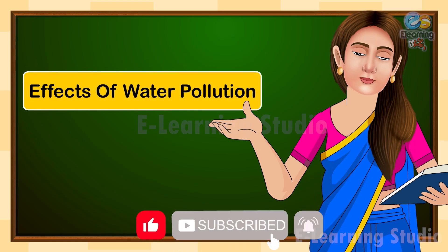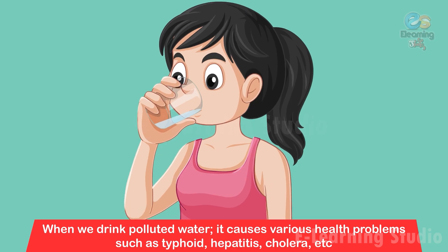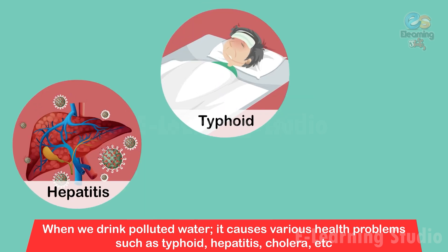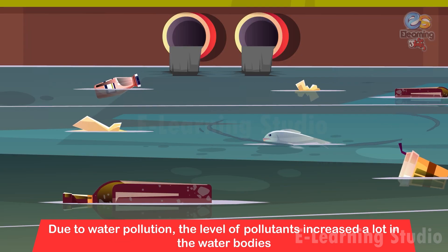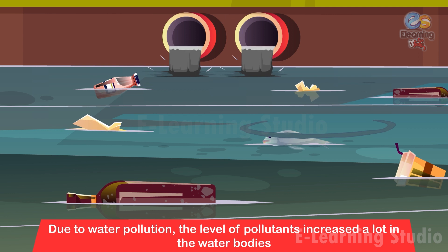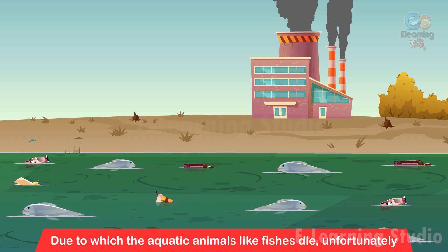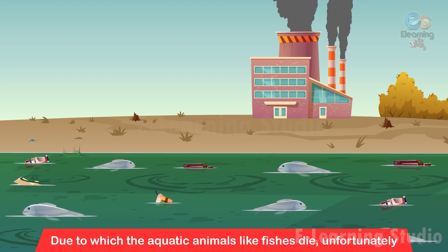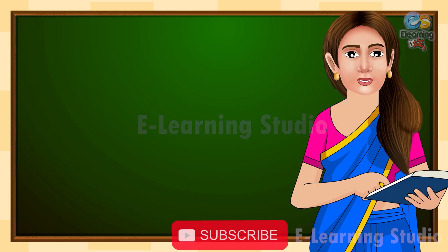Children, let us know about some effects of water pollution. When we drink polluted water, it causes various health problems such as typhoid, hepatitis, cholera, etc. Due to water pollution, the level of pollutants increases a lot in the water bodies, due to which aquatic animals like fishes die unfortunately. Water pollution also affects the food chain.